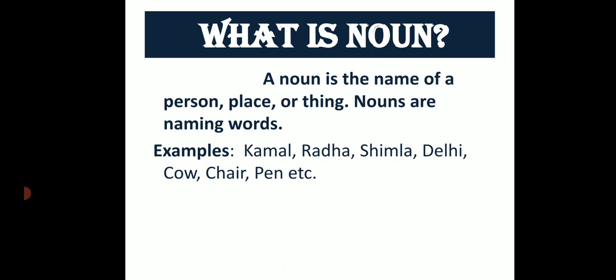Examples. Udaharan: Kamal, Radha, Shimla, Delhi, Cow, Chair, Pen, et cetera.